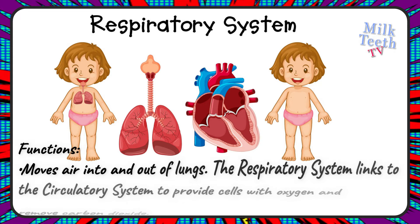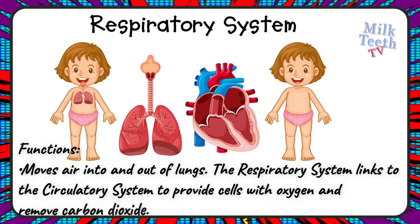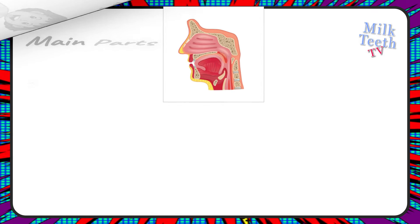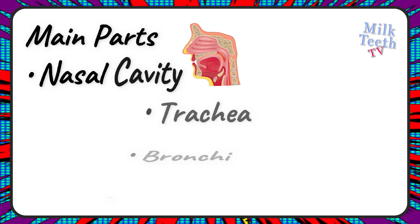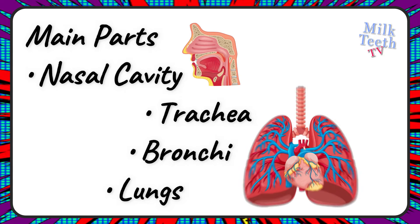The respiratory system. Functions of the respiratory system: moves air into and out of the lungs. The respiratory system links to the circulatory system to provide cells with oxygen and also remove carbon dioxide. Main parts of the respiratory system: the nasal cavity, which includes the nose and the mouth, trachea, bronchi, and lungs.